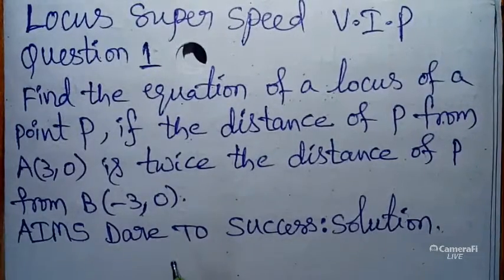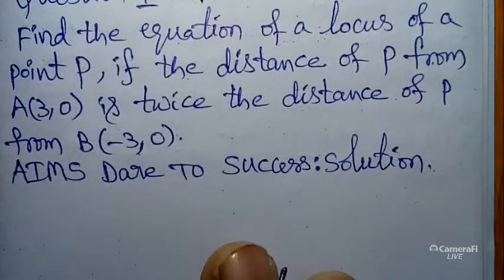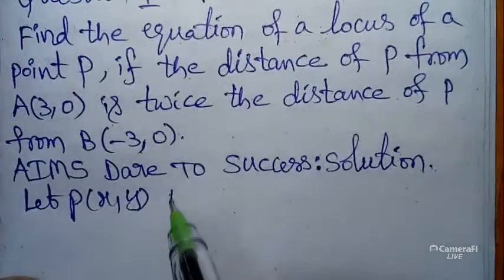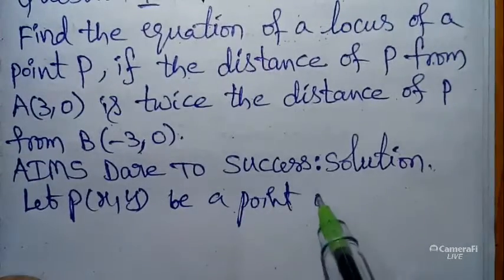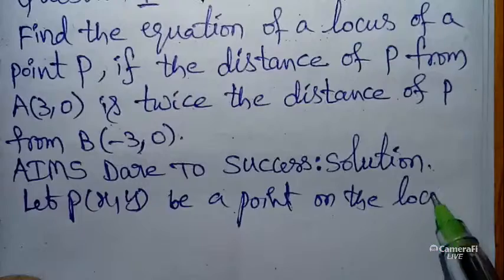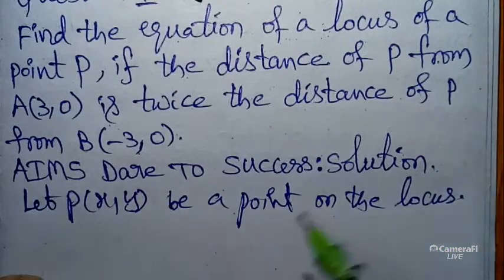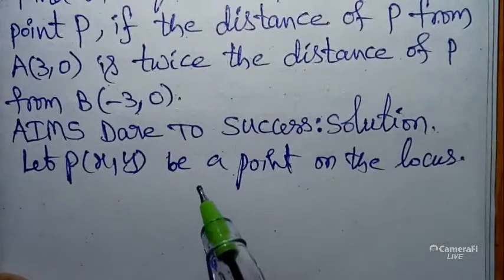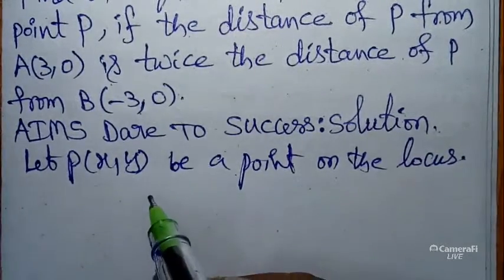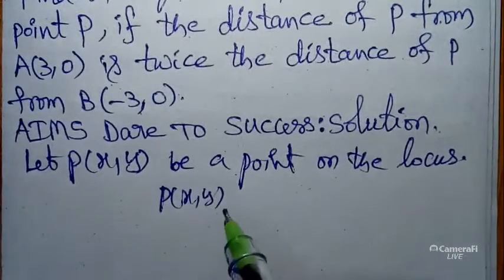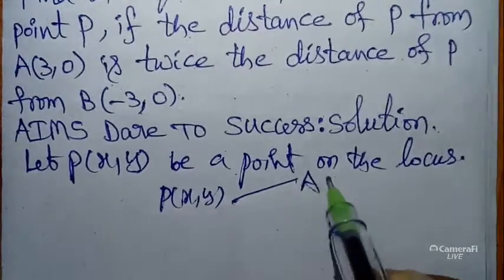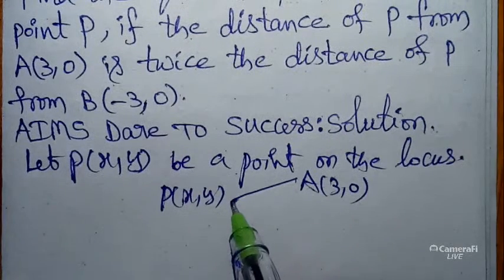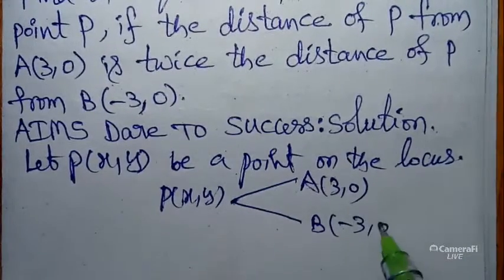Now I want to start the solution — equation of a locus. We assume that P(x, y) is a point on the locus. The question states: the distance of P from A(3, 0) — I am writing P as (x, y) — and A as (3, 0). That is twice the distance of P from B, which is B(-3, 0).